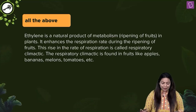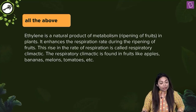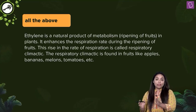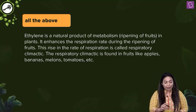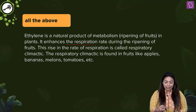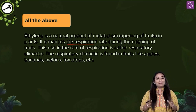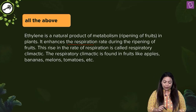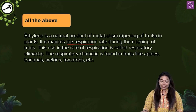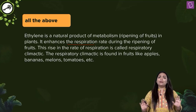Ethylene is a natural product of metabolism and brings about natural ripening of fruits. In plants, it enhances the respiration rate during the ripening of fruits. This rise in the rate of respiration is what you call as respiratory climactic. The respiratory climactic is found in fruits like apple, banana, melon, tomato, etc. Keep a note of it — this is a very important question.